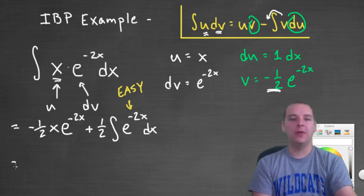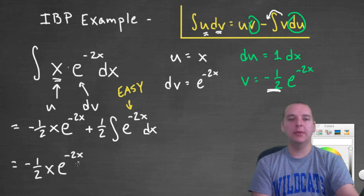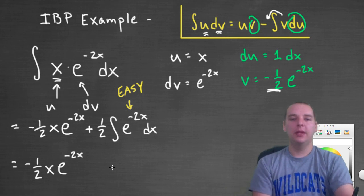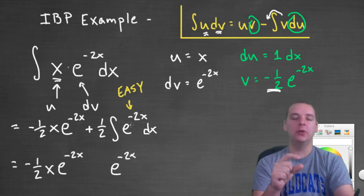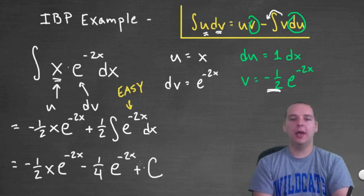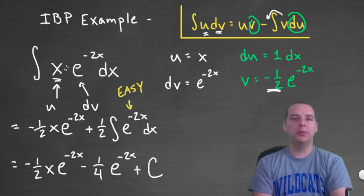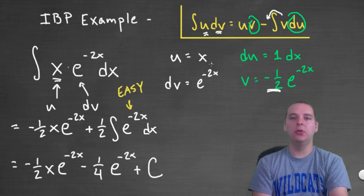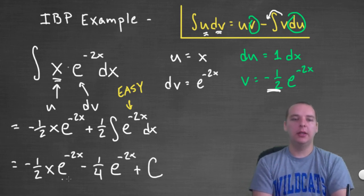The final answer: we have minus one half x e to the minus 2x. The integral of e to the minus 2x is negative one half e to the minus 2x, and multiplying that by the one half out front gives minus one fourth e to the minus 2x. Of course we add plus C at the end. To summarize: the product in the integrand tipped us off to use integration by parts; we made an appropriate choice for u and dv so that u got simpler; then we plugged in all four terms and did the final integration.